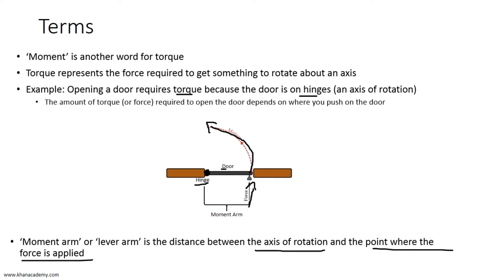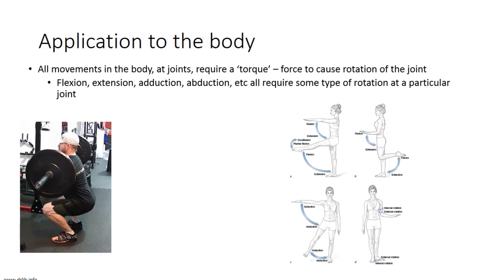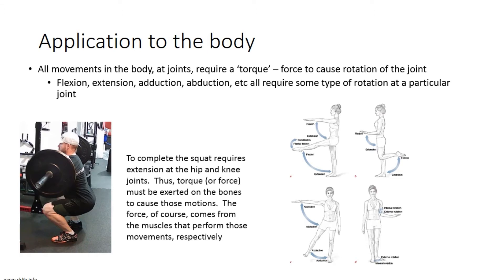Now let's apply this to the body. All movements in the body occur at joints and therefore require torque — whether it's a hinge joint or any other. Flexion, extension, rotation, abduction, adduction all require some type of rotational force at a joint. Applying this to the squat: to complete the squat we need extension at the hip and knee joints, so we need a torque at both of those joints to cause rotation.